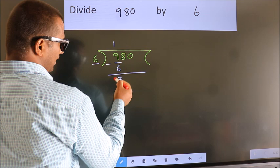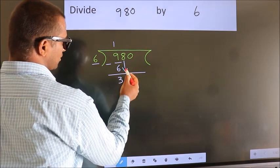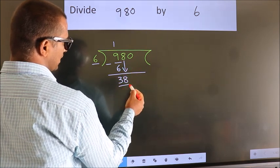We get 3. After this, bring down the beside number. So, 8 down. So, 38.